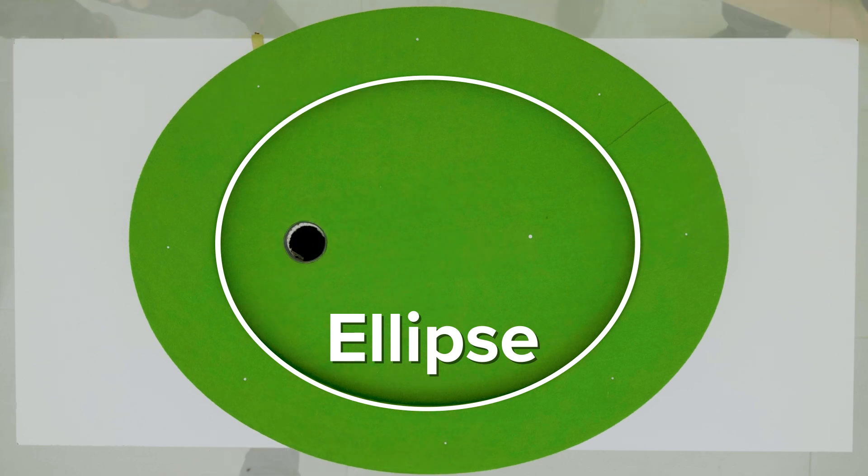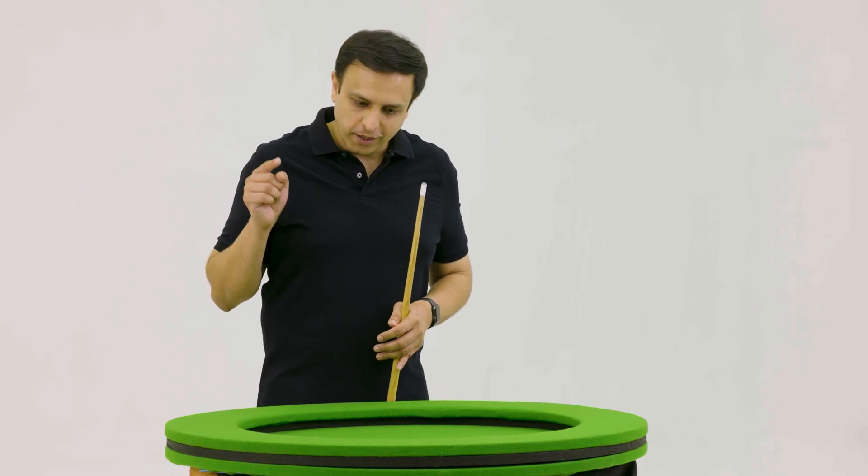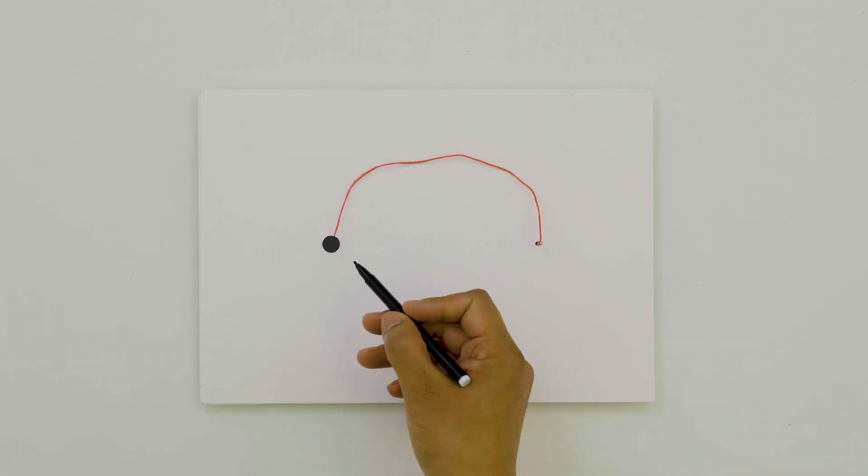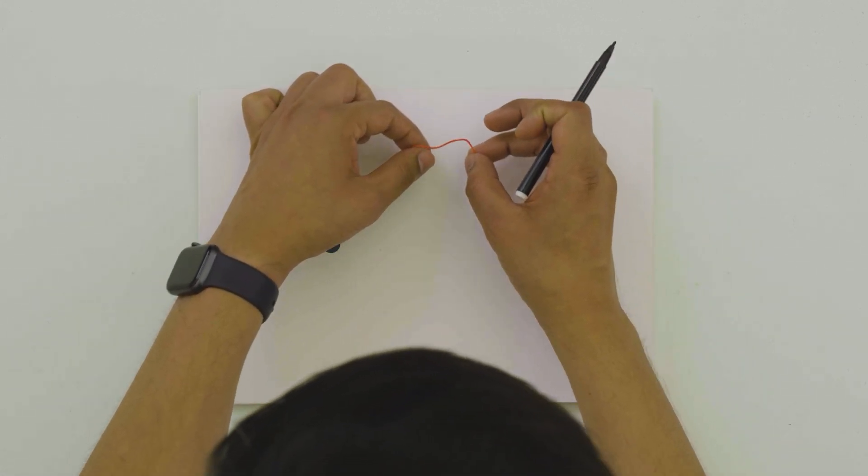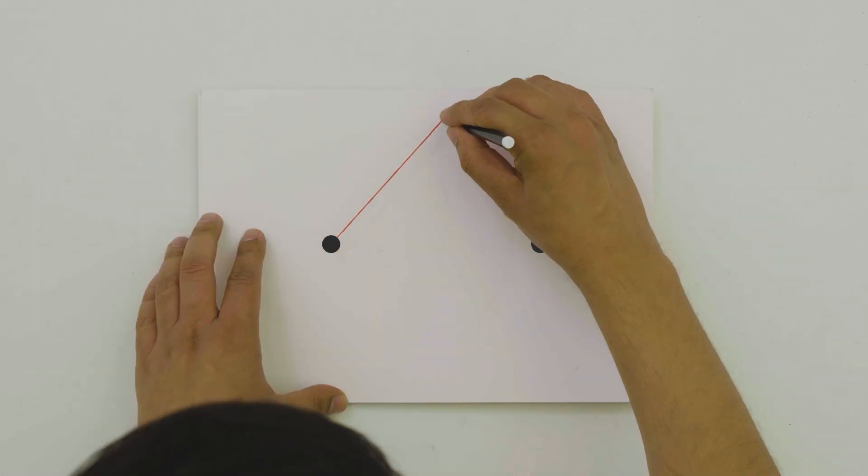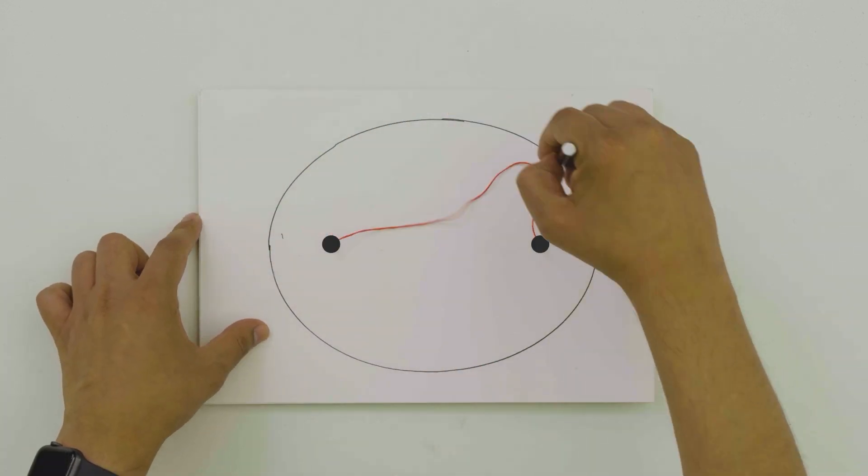To understand what's special about an ellipse, let's first explore how it's made. Just like a circle is made using one point and a fixed length, an ellipse uses two fixed points and a fixed length. Fix the points, tie a thread around them, keep the thread tight and revolve the pencil. You will get an ellipse.